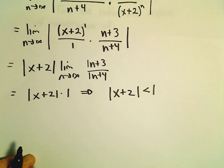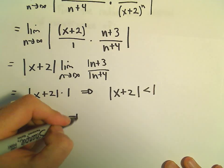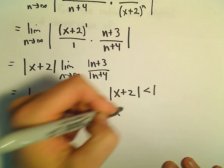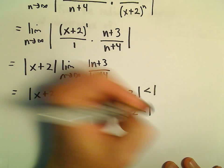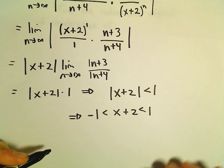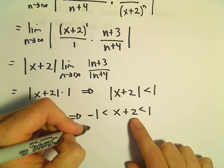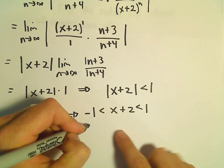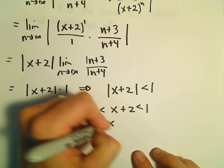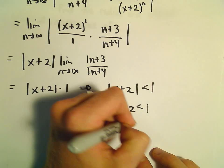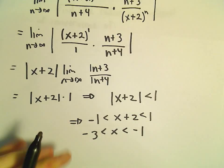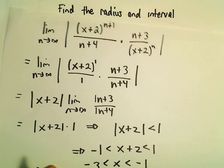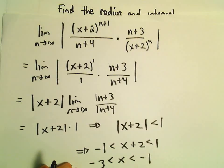The ratio test says the ratio has to be less than 1 to converge, giving us negative 1 less than x plus 2 less than positive 1. Subtracting 2 from everything, we get negative 3 less than x less than negative 1. Now we have to go back and test the endpoints.